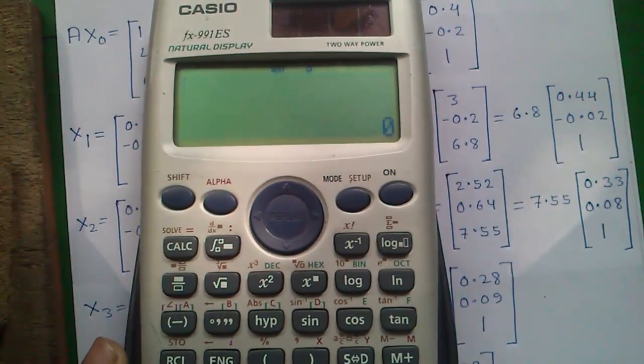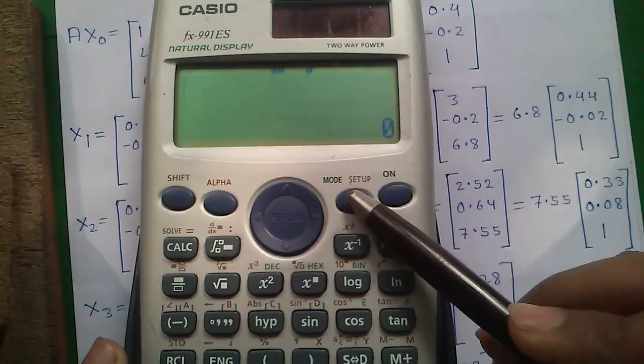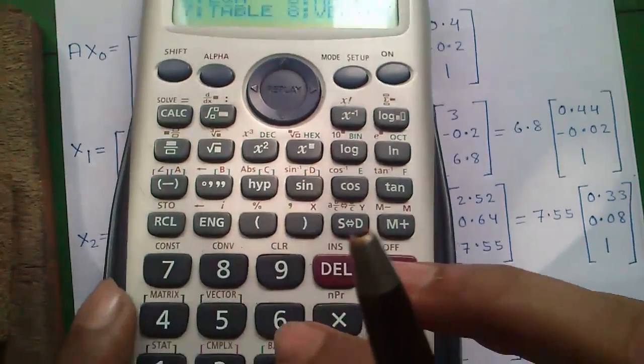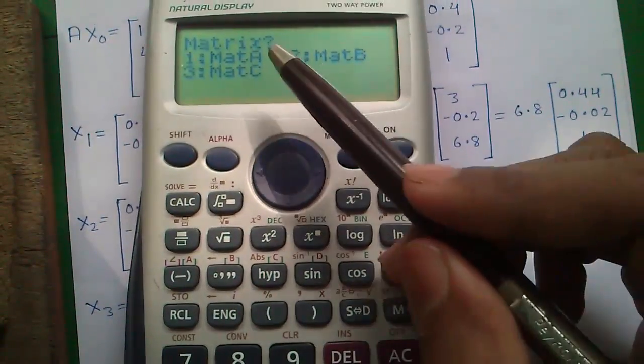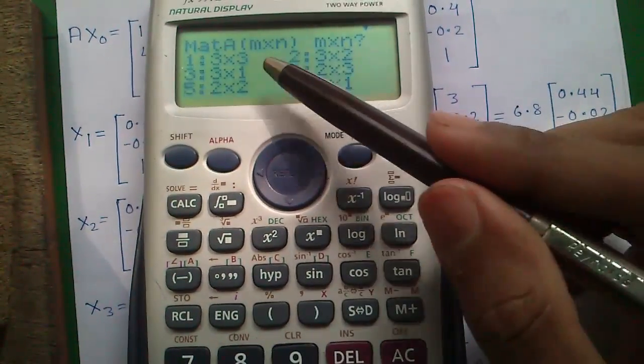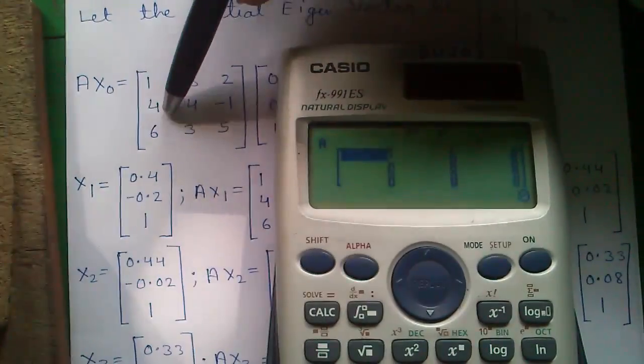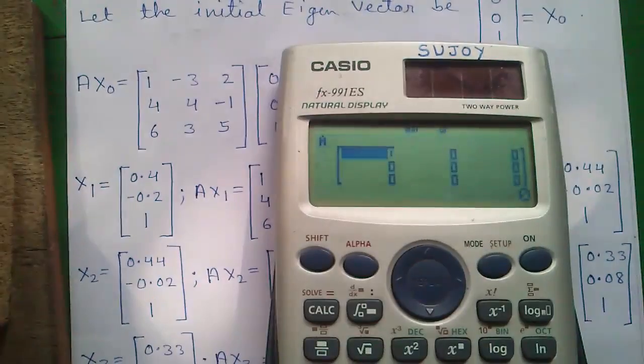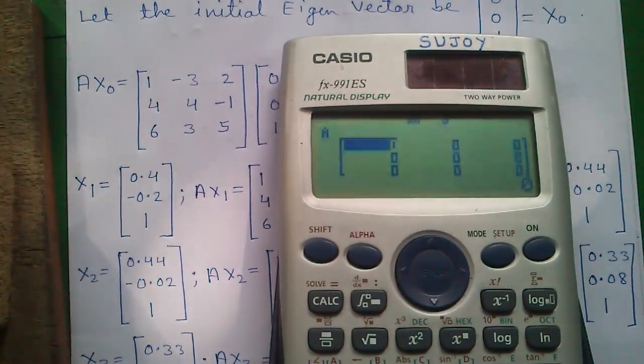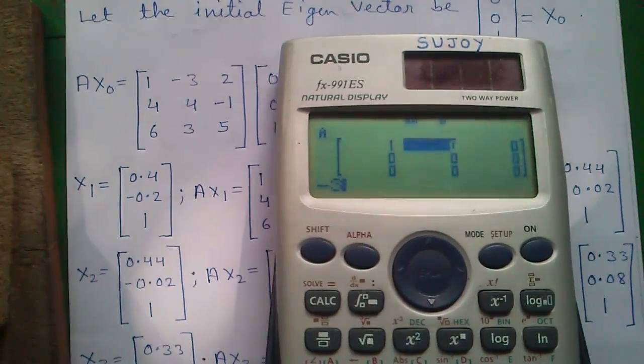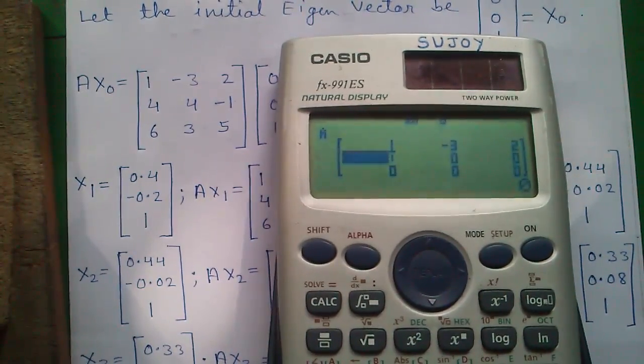For that, press the mode button, press 6 for matrix mode, 1 for matrix A, and 1 for 3 by 3 matrix. Now enter the matrix A into the calculator. To enter a number, type the number and press the equals button.